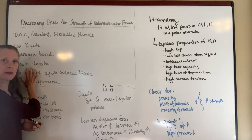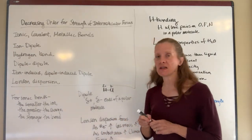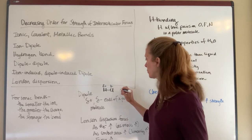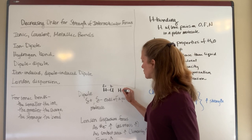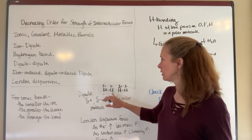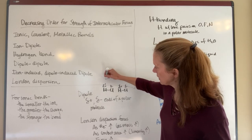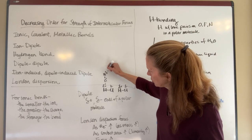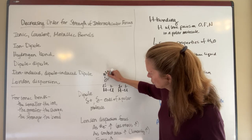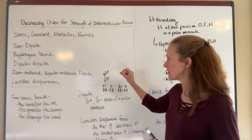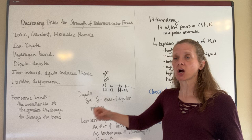A dipole-dipole interaction means that when one hydrogen chloride molecule comes close to another, it orients itself so that the chlorine's partial negative charge is next to the partial positive charge on hydrogen of the neighboring molecule. They orient themselves so that the partial negative charges and partial positive charges are next to one another.